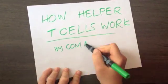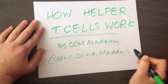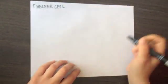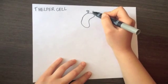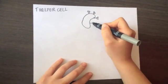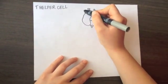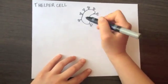Calm Academy presents how helper T cells work. Helper T cells are considered the most important cells in adaptive immunity. The adaptive immune system is composed of highly specialized systemic cells and processes that eliminate or prevent pathogen growth.